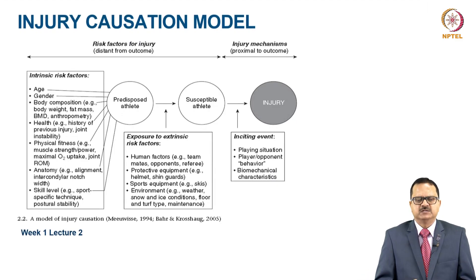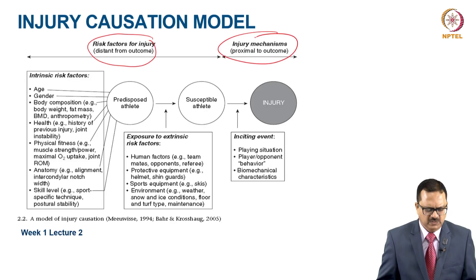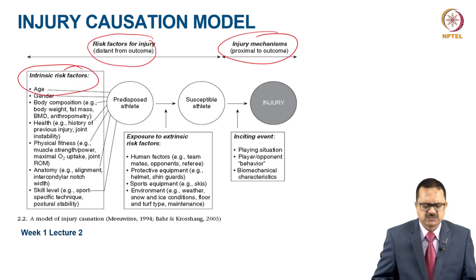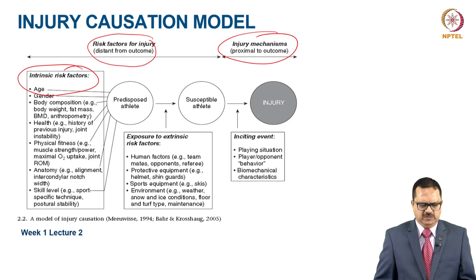There is a model of injury causation given by Meeuwisse, Bahr, and Croshaw. They describe this model in terms of risk factors for injury and injury mechanisms. There are certain intrinsic risk factors for an athlete such as age, gender, body composition, health, physical fitness, anatomy, and skill level. When these intrinsic risk factors are present in an athlete, the athlete becomes a predisposed athlete.